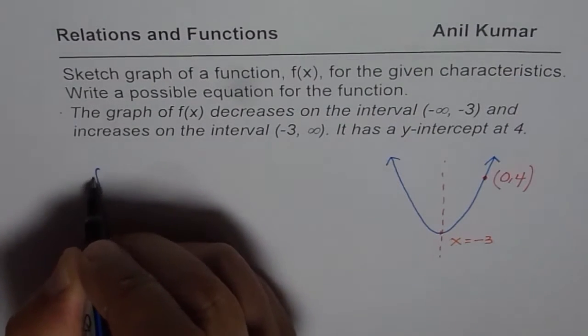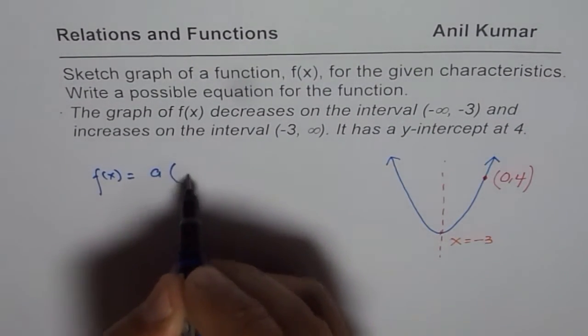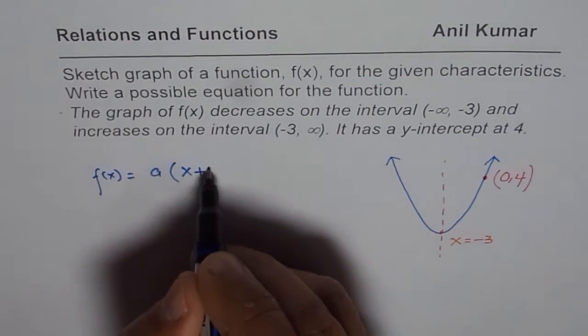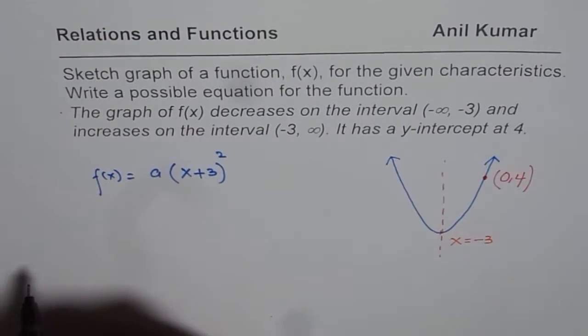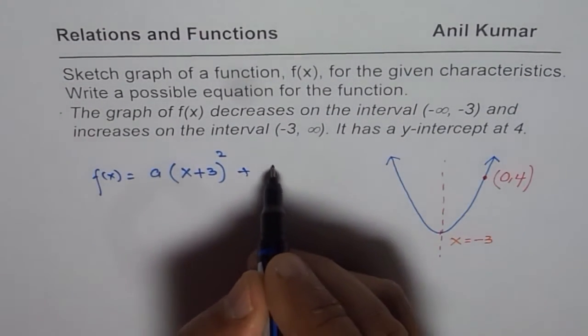So the equation will be f(x) equals some value a times x. Normally it is at 0. Since it is at -3 it should be (x+3)² plus some value, let me call this as c.